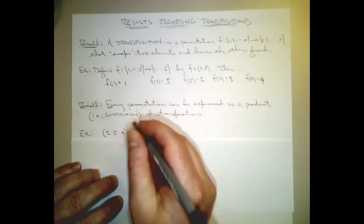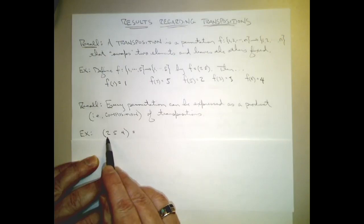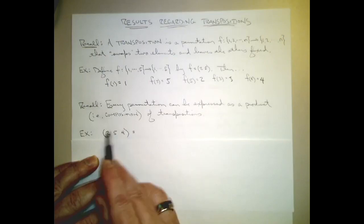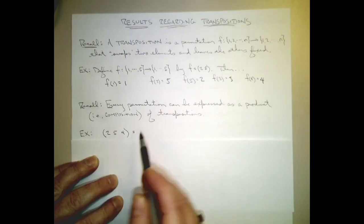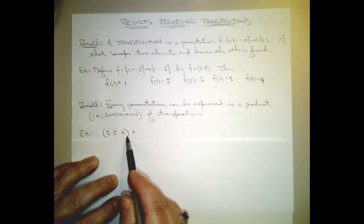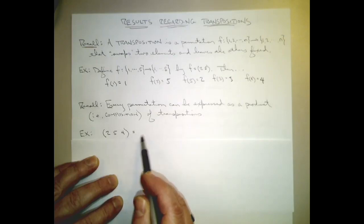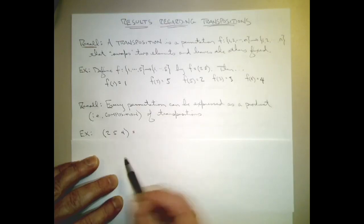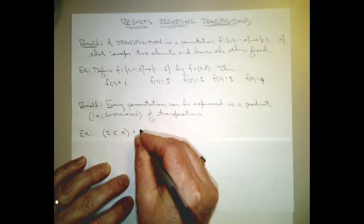Well, we saw that we could write the function that sends 2 to 5, 5 to 4, 4 to 2, and fixes 1 and 3. And if we were considering this as a function acting on the set from 1 through 16, it would also send 6 to itself, 7 to itself, all the way through 16. However we're thinking about this, we could rewrite it as a composition of transpositions.